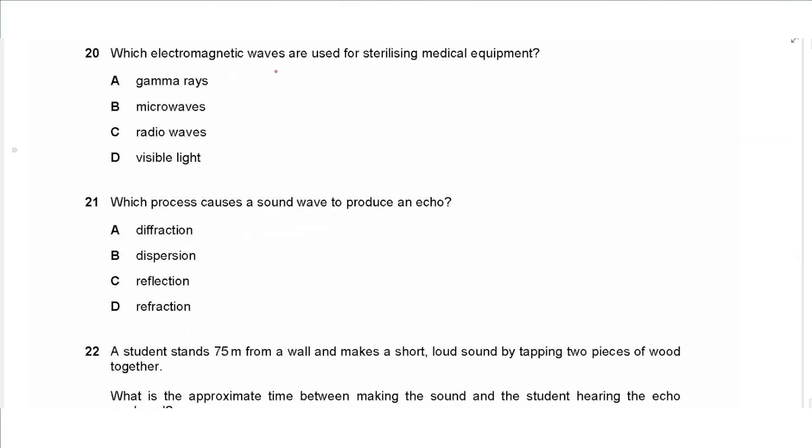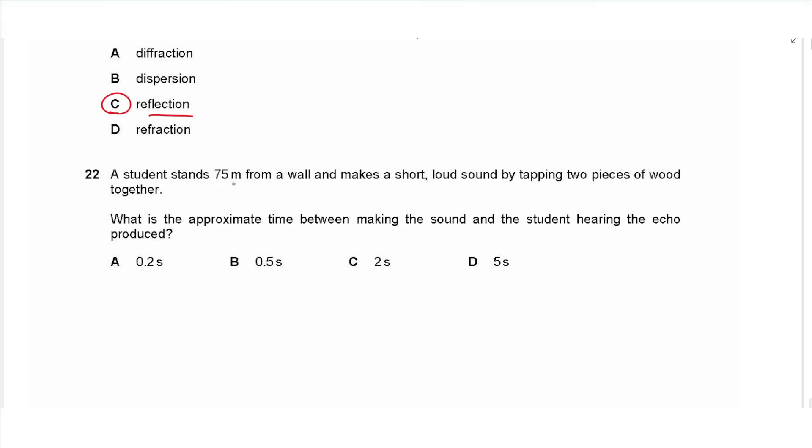Question 20 says which electromagnetic waves are used for sterilizing medical equipment, that's gamma rays. Question 21 says which process causes a sound wave to produce an echo. Echo is the reflection of sound, so the choice is C.